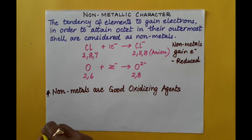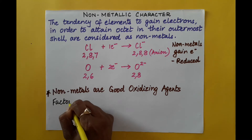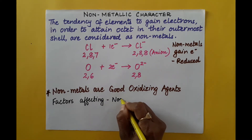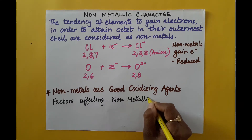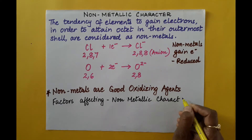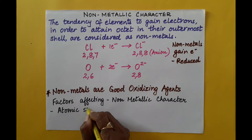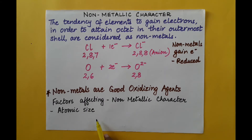Now let us understand the factors which affect non-metallic character. The first factor is atomic size. Across the period, atomic size decreases, electronegativity increases, and the element can easily gain electrons, so non-metallic character increases. Down the group, atomic size increases and electronegativity decreases, so non-metallic character decreases. The smaller the atomic size, the greater the non-metallic nature.